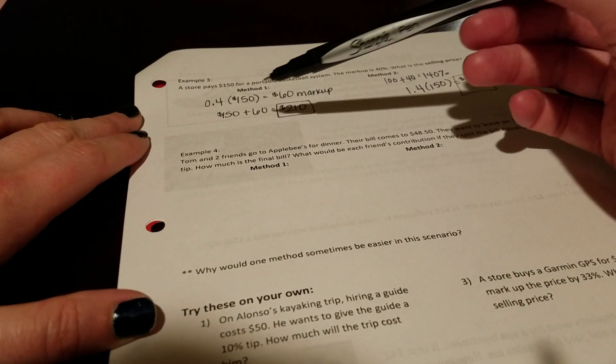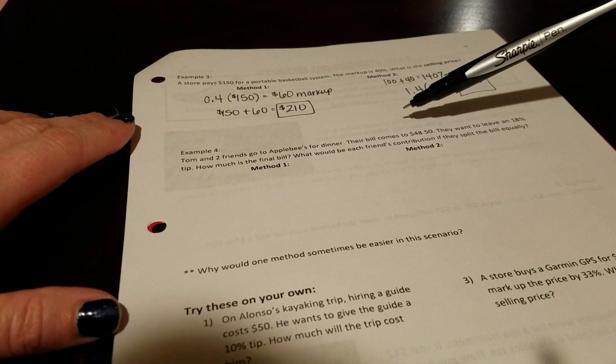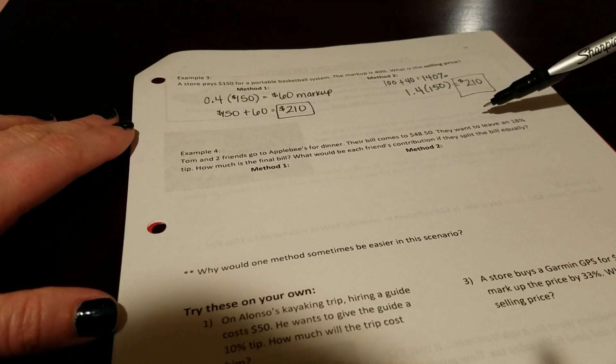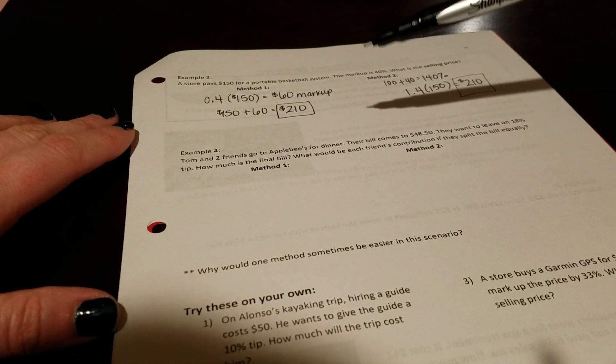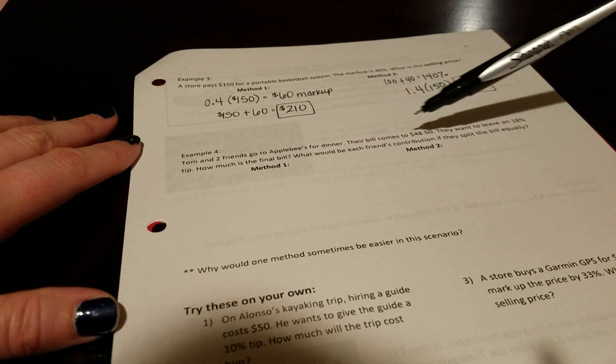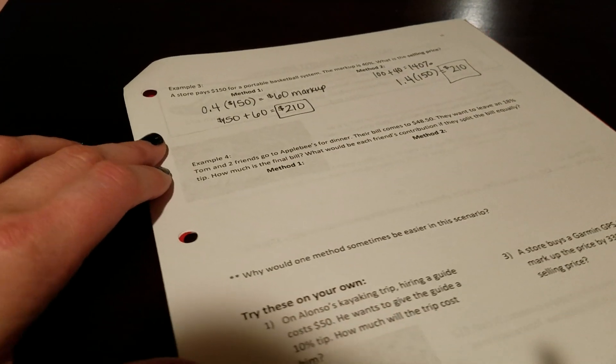In example four, Tom and two friends go to Applebee's for dinner. Their bill comes to $48.50. They want to leave an 18% tip. How much is the final bill? And what would each friend's contribution be if they split it equally?